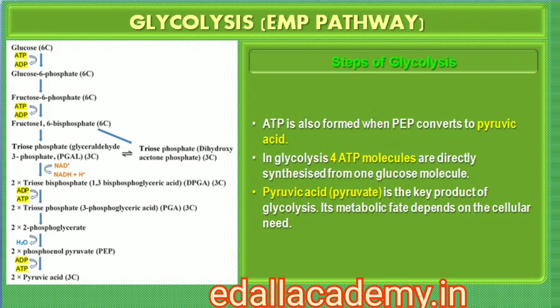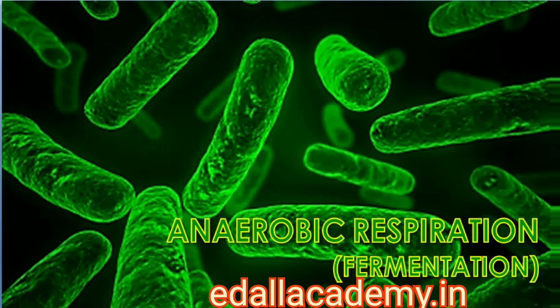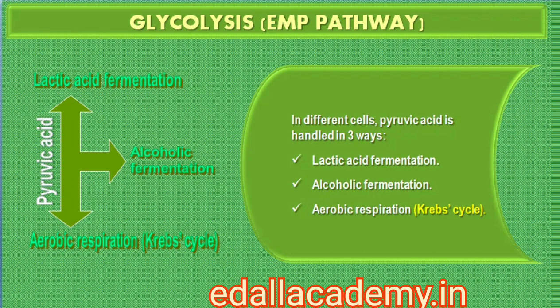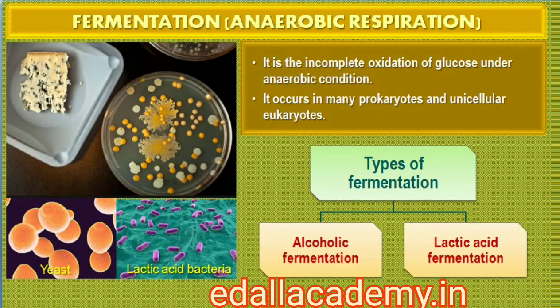Pyruvic acid is the key product of glycolysis. What is the metabolic fate of pyruvate? This depends on the cellular need. There are three major ways in which different cells handle pyruvic acid produced by glycolysis: lactic acid fermentation, alcoholic fermentation, and aerobic respiration. Fermentation takes place under anaerobic conditions in many prokaryotes and unicellular eukaryotes. For the complete oxidation of glucose to CO2 and H2O, organisms adopt the Krebs cycle, also called aerobic respiration, which requires an O2 supply.